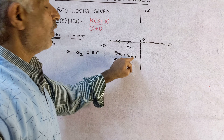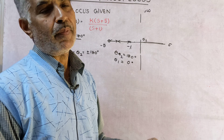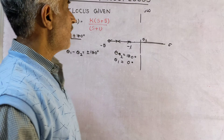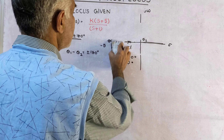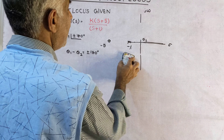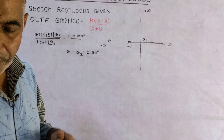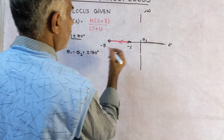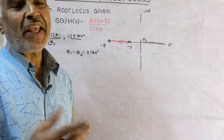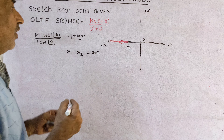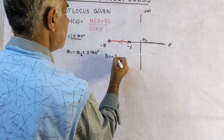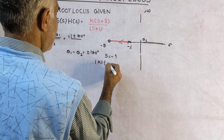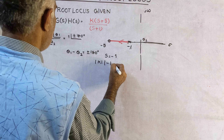Now shift the trial point. If you shift the trial point here, joining with the pole gives theta 2 equal to zero, since the point is on the real axis to the right of the pole. Theta 1 is also zero. Both theta 1 and theta 2 are zero, so we do not get plus or minus 180 degrees. Therefore this cannot be the root locus.